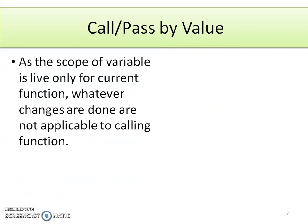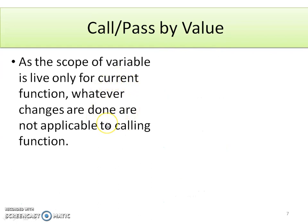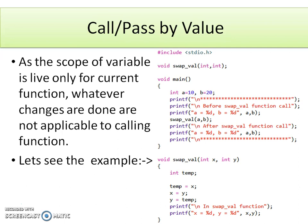The next concept is: since the scope of a variable is live only for the current function, whatever changes are done are not applicable to the calling function. In the addition example, the addition was performed, the result was returned, and the result variable displayed it. However, to understand the meaning of this statement more clearly, the previous example is not sufficient. We will see one more example where we are trying to swap two numbers.